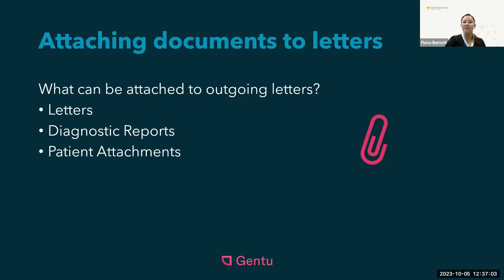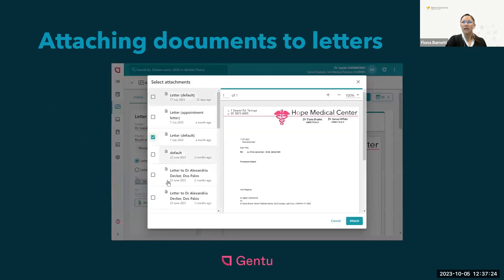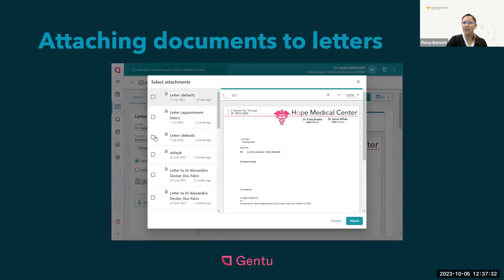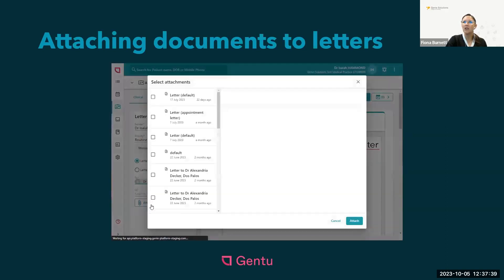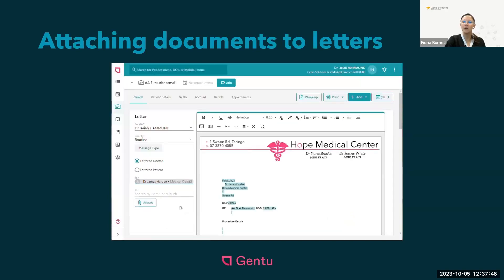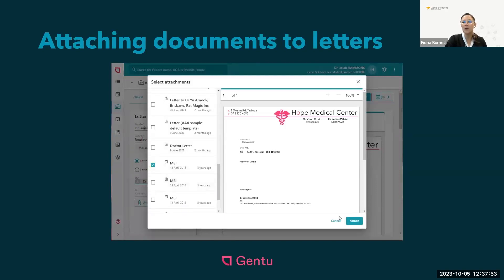Attaching documents to outgoing letters is a feature that has been requested by many practices. We are happy to share that this functionality is now available and you can choose to attach letters, diagnostic reports or patient attachments to outgoing correspondence. When creating a letter, all you need to do is click the attach button that is visible within the screen and you can choose what attachments to add to this particular letter. The attachments will be present at the end of that letter and you can then choose to remove those. This is a really simple method that goes a long way to improving communication between practitioners within the one document.